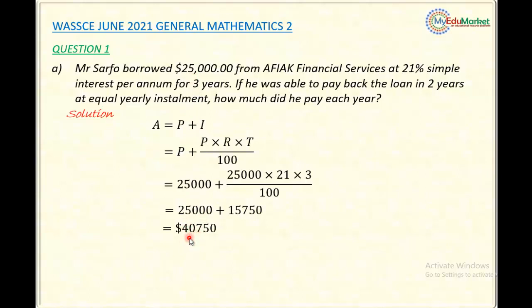This is the total amount that the person, Mr. Safo, is expected to pay after three years. But in the question, it says he was able to pay even before the three years, in two years, and he paid equal amount each year, equal yearly installment.